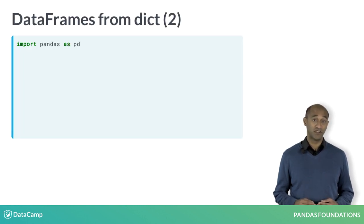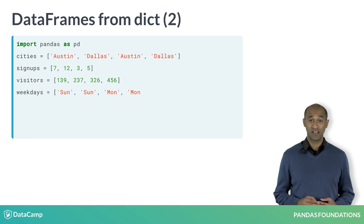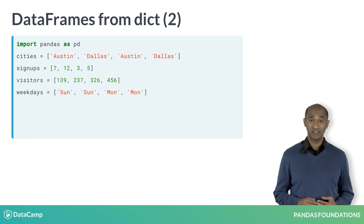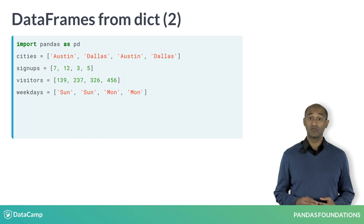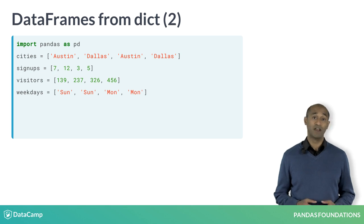Let's build the data frame users up in a different way, using conforming lists — cities, sign-ups, visitors, weekdays — for the column data. It is useful to be able to build data frames from lists because lists are a common data structure in Python, and it's natural that we might receive data accumulated in lists.